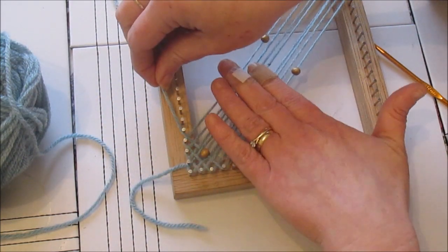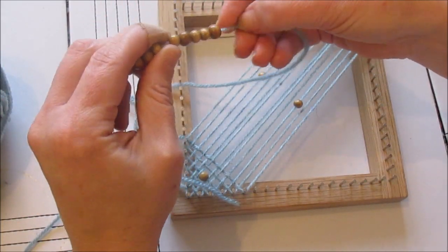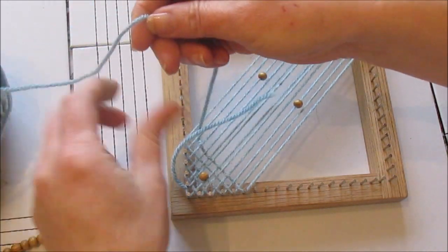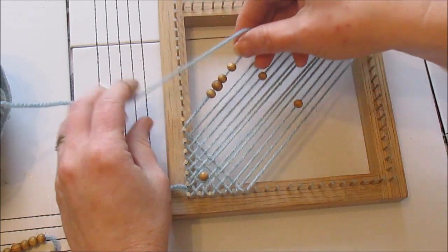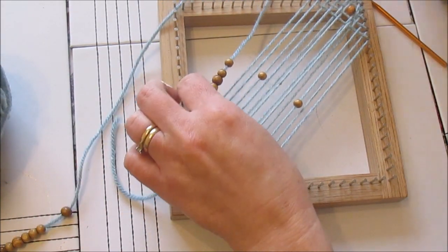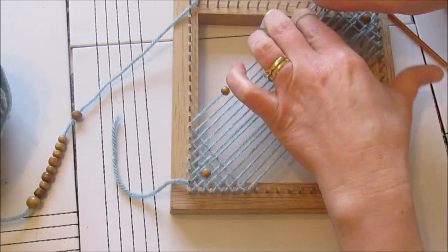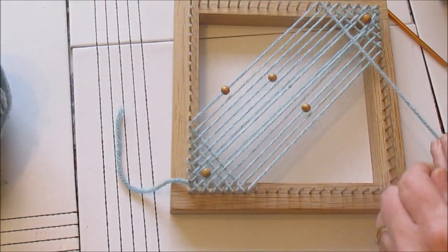After each beaded round I'll be working two rounds of basic weave. Then I'll be adding more beads to my weaving in exactly the same way by selecting how many beads I would like to put onto the piece. Moving them up onto the yarn. In this case I'm taking another four beads and leaving one bead on each side of the weaving.